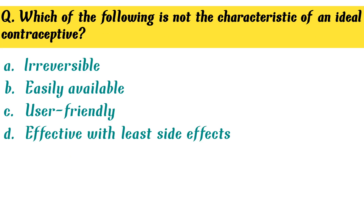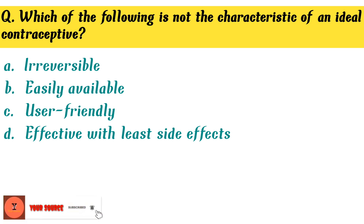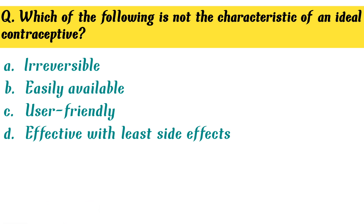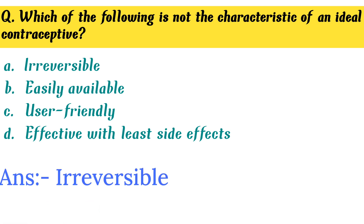Which of the following is not the characteristic of an ideal contraception? Option D. All of the above is the correct answer.